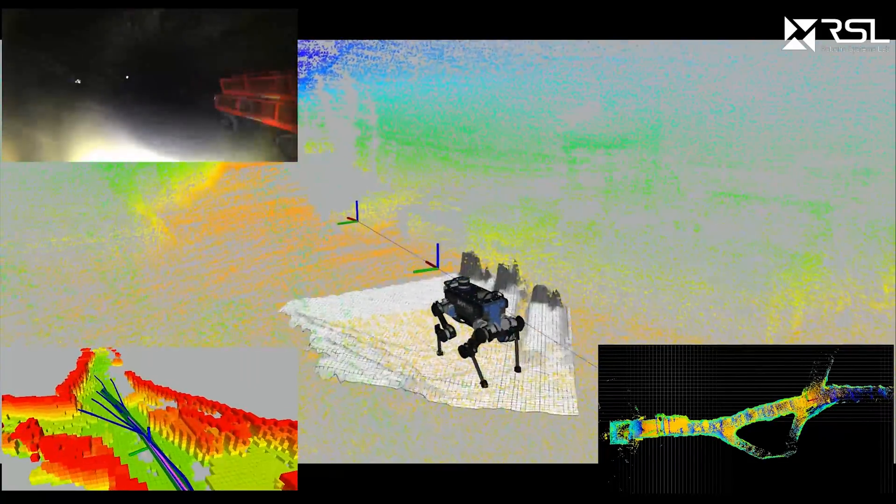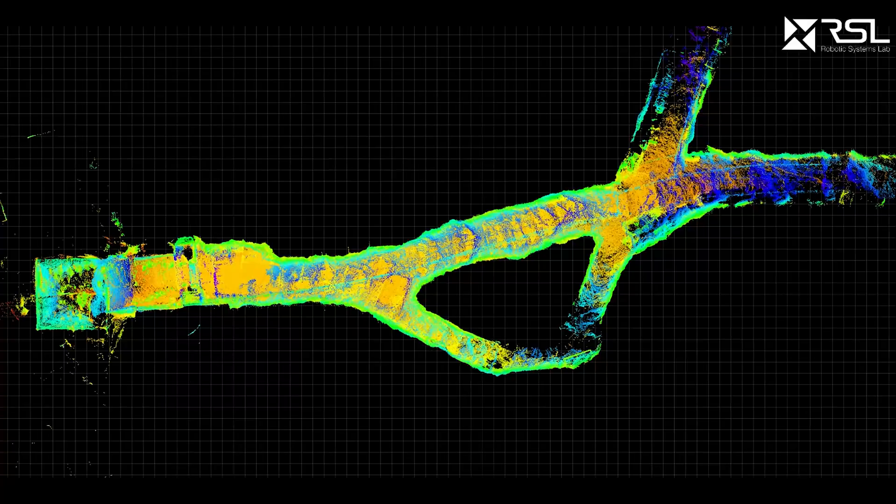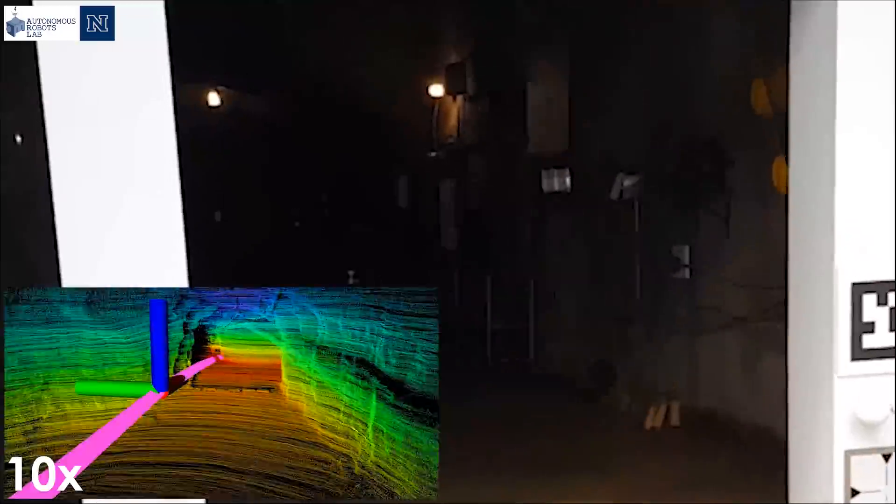Through the fusion of LiDAR, visible light, and thermal vision alongside inertial measurements, our robots perform robustly even in the dark, narrow, and obscurance-filled subterranean settings.